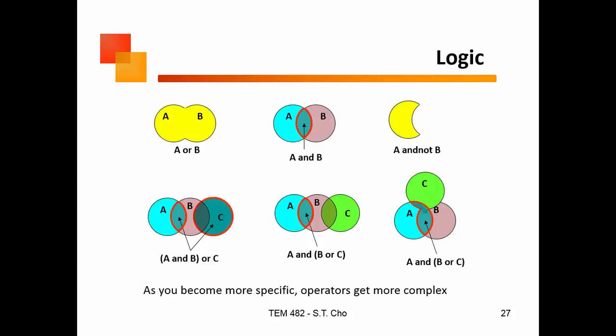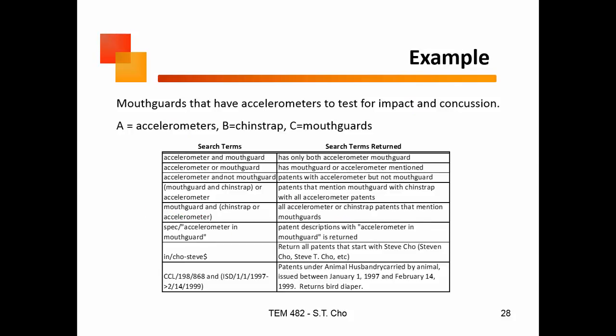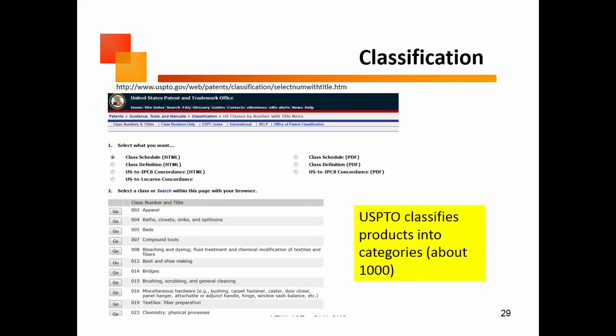I'm not going to go through Boolean logic — you pretty much know what an OR or AND is and the different combinations. I just have it up there for people who may not be familiar. Knowing those operators affects what actually gets returned. Here are examples of information that gets returned — if you're interested in accelerometers, straps, and mouth guards. The USPTO has about a thousand product classes — you can see things like apparel, bridges, textiles — pretty much everything. You have a main class and subclasses.